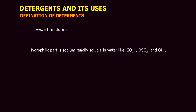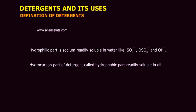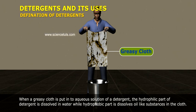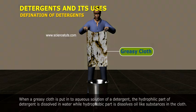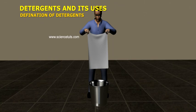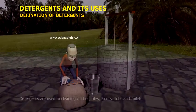The hydrocarbon part of the detergent is called the hydrophobic part, which is readily soluble in oil. When a greasy cloth is put into an aqueous solution of a detergent, the hydrophilic part dissolves in water while the hydrophobic part dissolves in oil-like substances in the cloth. On slight agitation, grease is readily removed from the clothes.